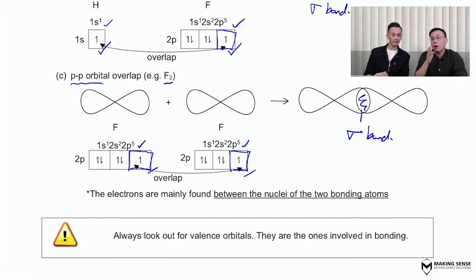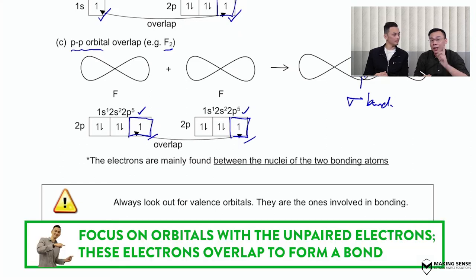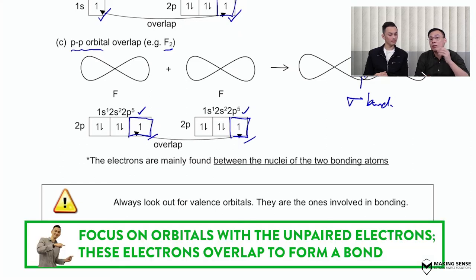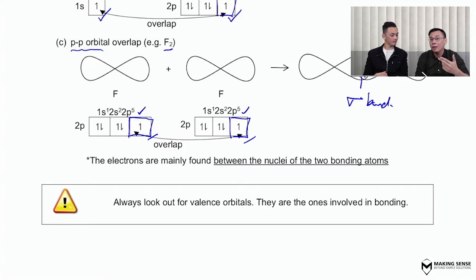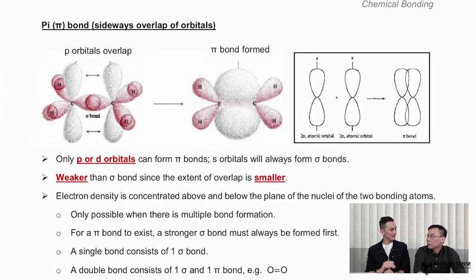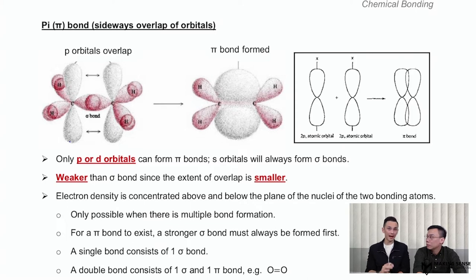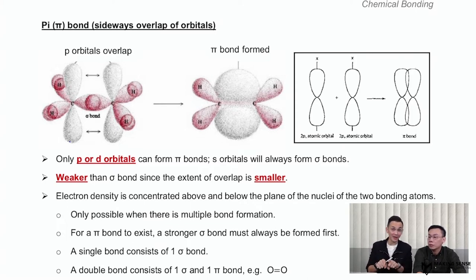In deducing what types of orbitals are involved in forming a sigma bond, the focus is always on the valence orbital, because the valence orbital contains the valence electrons, and valence electrons are always the ones involved in bonding. We are done with sigma bonds — why don't we bring them through the second type, which is pi bonding? Remember, it means a side-on overlap or a side-on car crash.